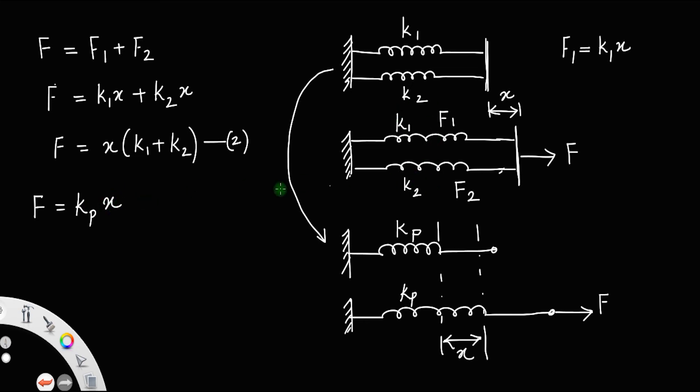So the effect of these two springs is replaced by this single spring. Let us call that as equation number 3. Both the equations are the same, they both tell about the amount of force. So you can equate that kp into x is equal to x times k1 plus k2. You can cancel this x, so that effective spring constant of the combination is equal to k1 plus k2.